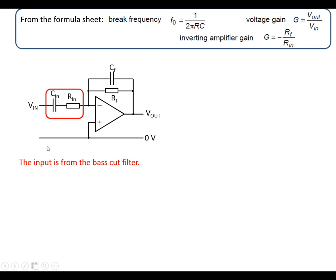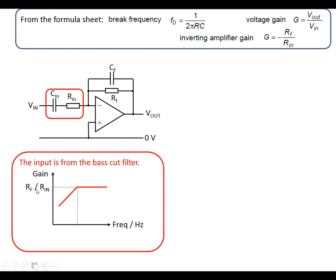The main cells are the gain frequency characteristics, so maximum gain of RF over RN, and we've got a break frequency, in this case using the input resistor and the input capacitor.